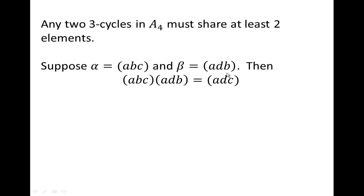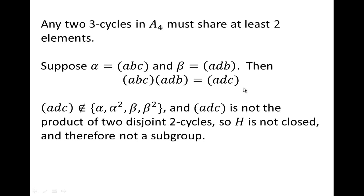So let's look at the product of these two, alpha times beta. The product of those is another 3-cycle, (adc). Now why is this an issue? Because (adc) is not going to be in my group. Alpha and alpha squared involve a, b, and c. Beta and beta squared involve a, d, and b. This involves a, d, and c. So what does that mean? That means that (adc) is not in this set of elements. (adc) is not the identity. (adc) is not a product of two disjoint 2-cycles. And so H is not closed. The set H is not closed under multiplication, and therefore it's not a subgroup.